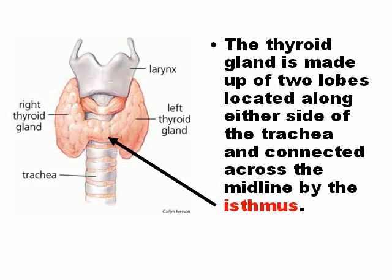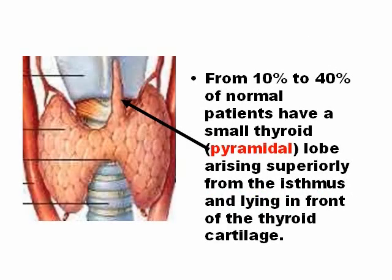The thyroid has two lobes, and these two lobes are connected by a bridge called the isthmus. It is very important to measure the isthmus when scanning the thyroid. Some people also have a small part called the pyramidal lobe, which is superior to the isthmus.